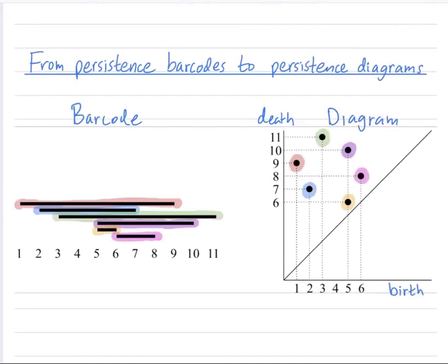When do you recommend taking the barcode and when the diagram? Are there certain situations where you would prefer one over the other?